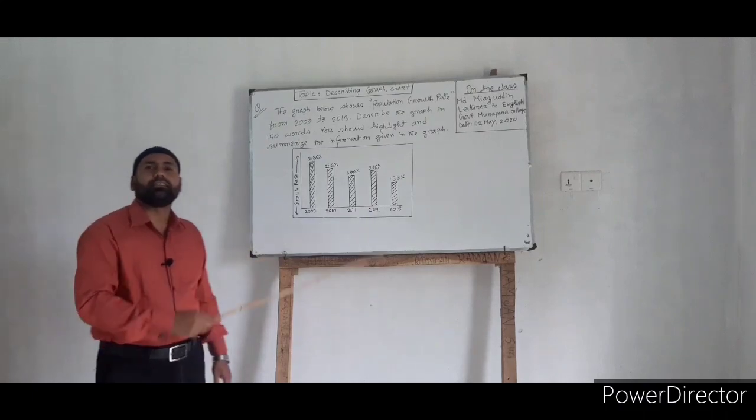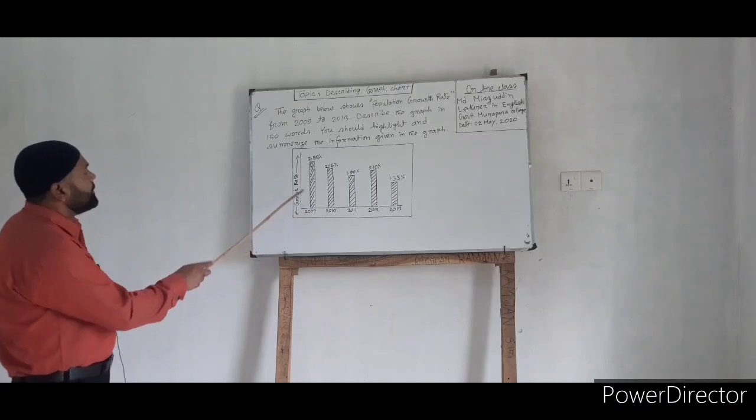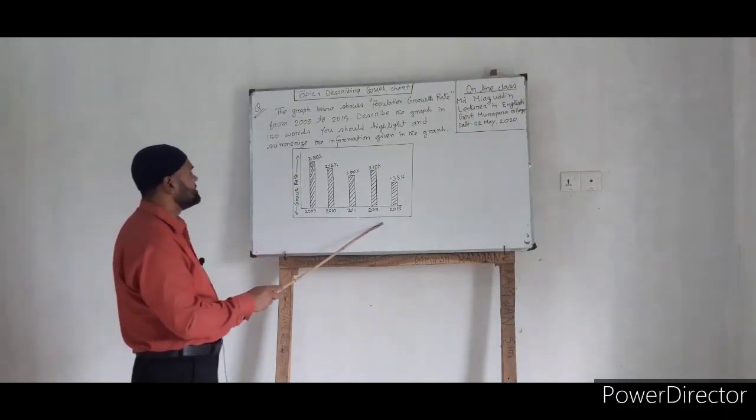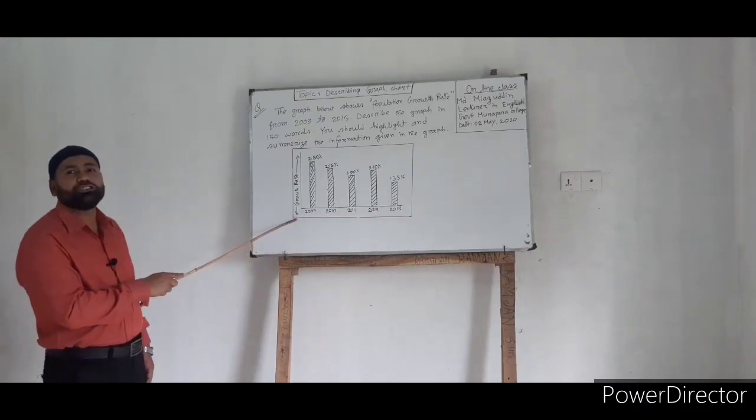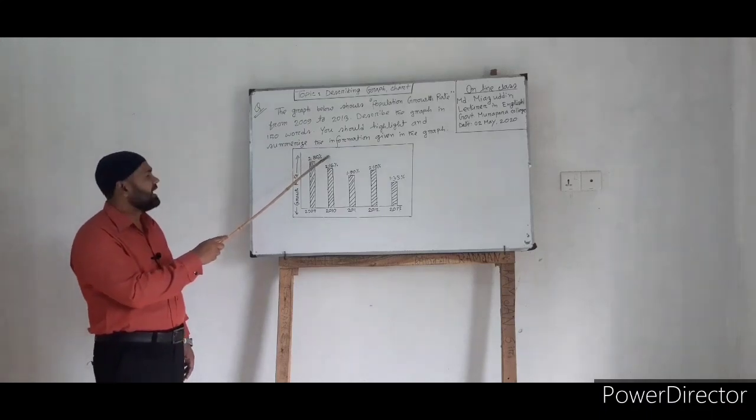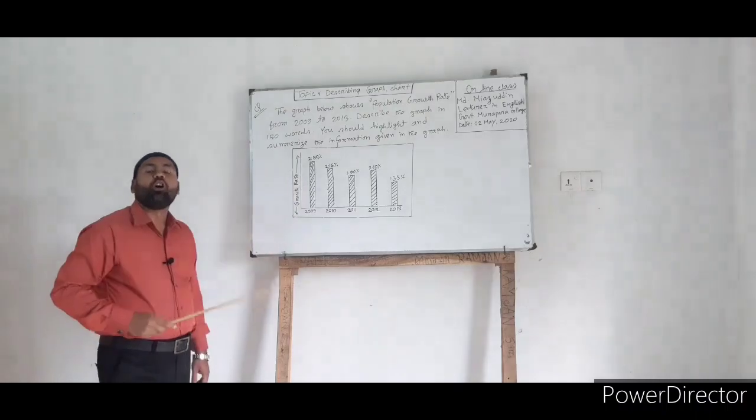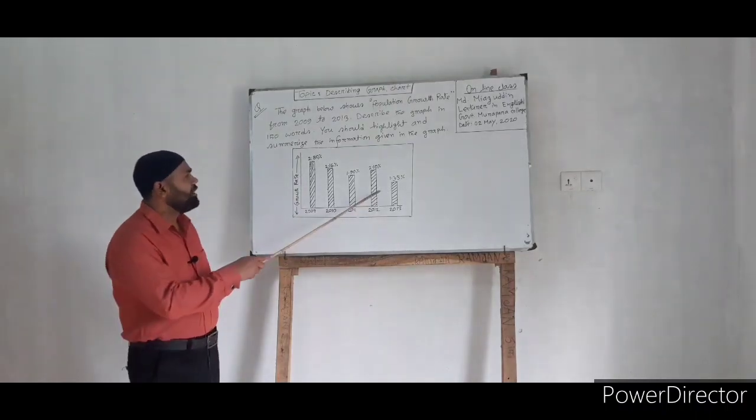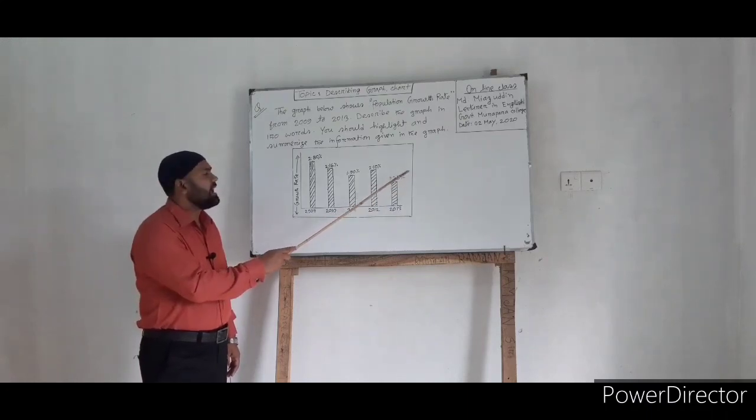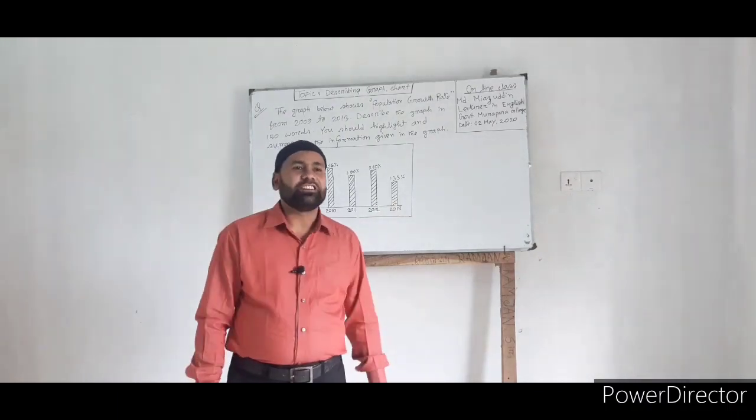At last, we can explain the third stage in this way: By analyzing the chart, we can say that the highest population growth rate of Bangladesh was 2.80 percent, and it was in 2009. On the other hand, the lowest population growth rate was 1.33 percent, and it was in 2013.